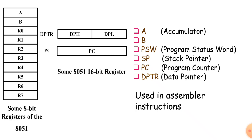The Program Counter, shortly referred to as PC, is a 16-bit register. It is used to store the address of the next instruction to be executed by the microcontroller.